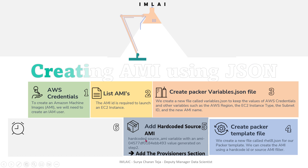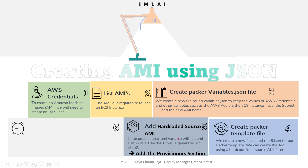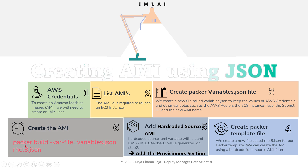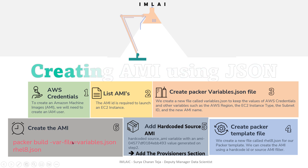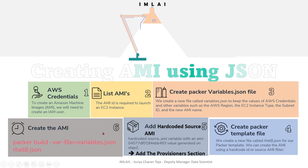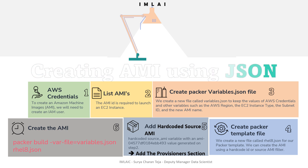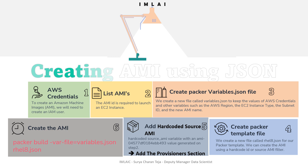Then you add the provisioner section — we will add one or two commands there. The last step to create the AMI is to use the packer build command with the -var-file option pointing to variables.json, so it connects with the main template. This is our practical demonstration flow — let's jump into the practical demonstration and start working on it.